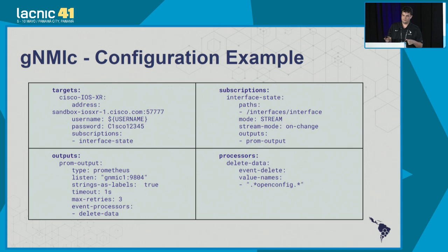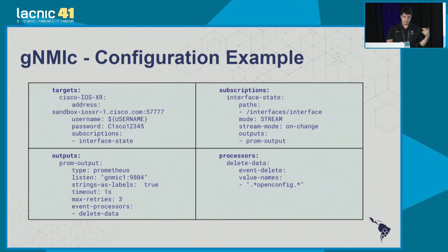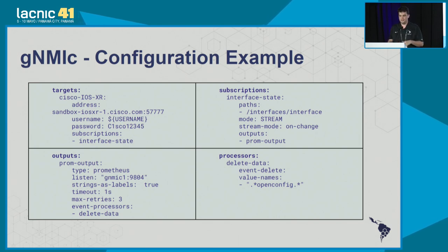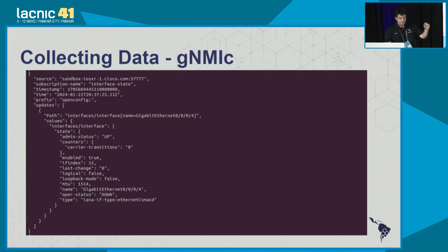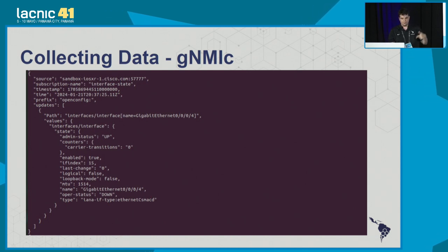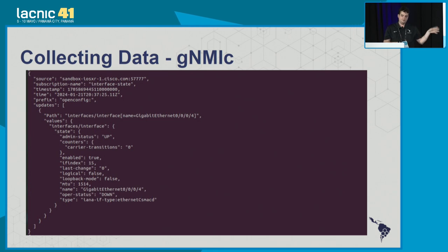At the end we have the processor we'll use to transform this data. This is an example of information I'm collecting. Remember this comes in real time — if I change the state of a port, I get a new packet immediately. As you can see, we have the interface state — interface four — and the admin state is up.